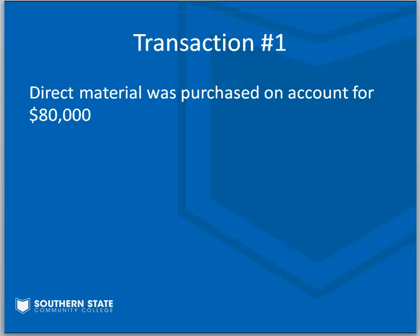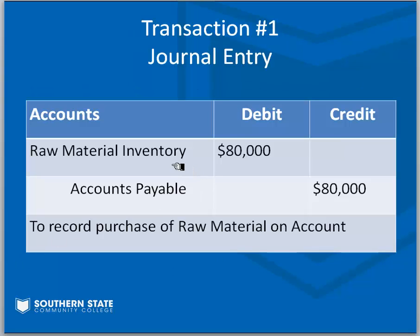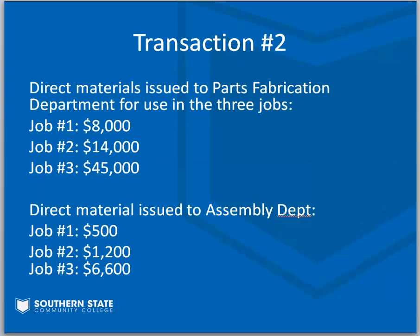Transaction number one: direct materials purchased on account for eighty thousand. A lot of you make this harder than it has to be — we're using things learned in principles of accounting here. Direct material purchased on account for eighty thousand: we'd have a debit to raw material inventory, the asset account, for eighty thousand, and then a credit to accounts payable for eighty thousand — we owe eighty thousand dollars for the material we bought. That's transaction number one.